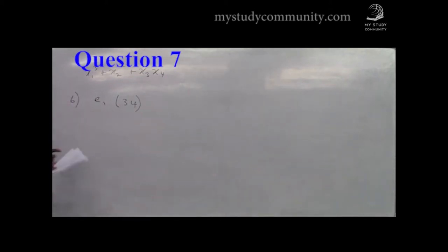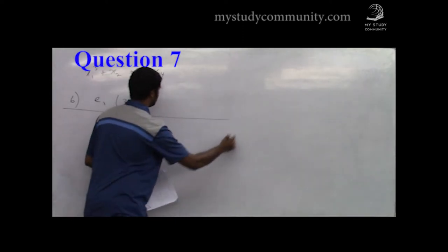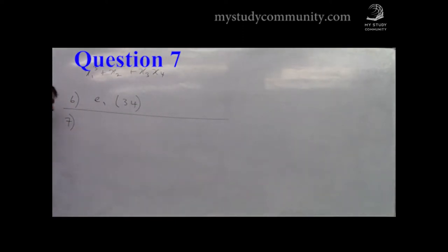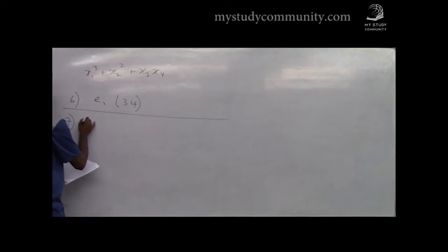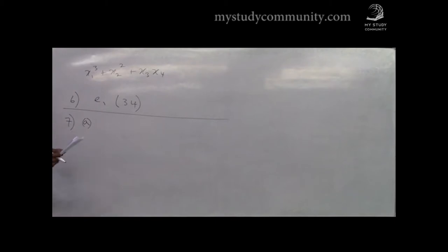Question 7. We have a group G and H defined as {g⁻¹ : g ∈ G}. Prove that H is a subgroup of G. We use the subgroup test. First we need to show non-empty.